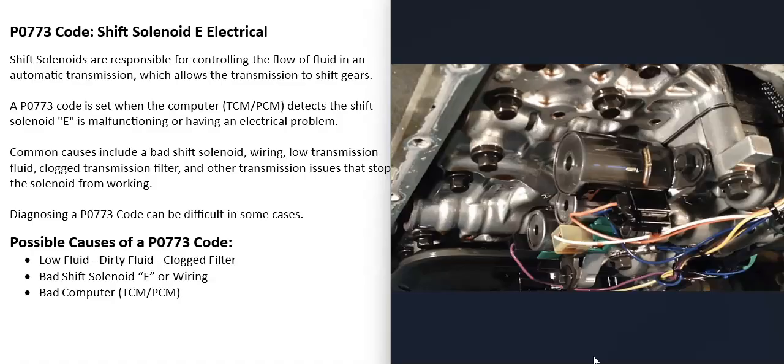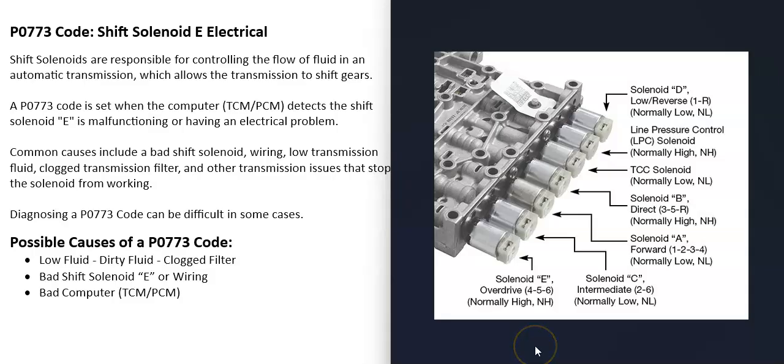If you do go to work on a vehicle with the P0773 code, you will need to get wiring schematics along with diagrams to know where all the solenoids are located, mainly the solenoid E, because there will be differences depending on the year, make, and model.